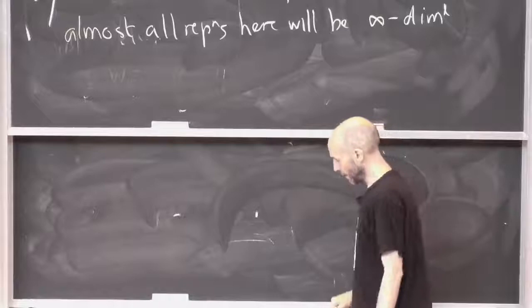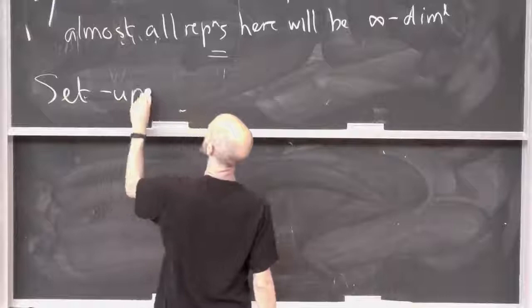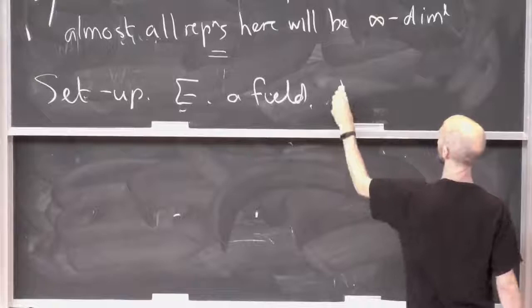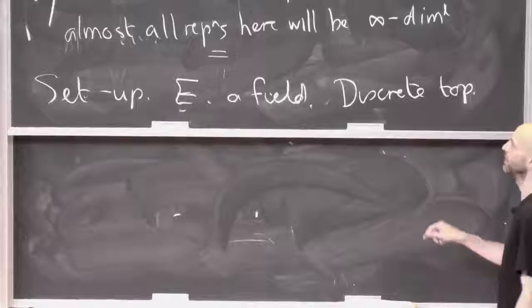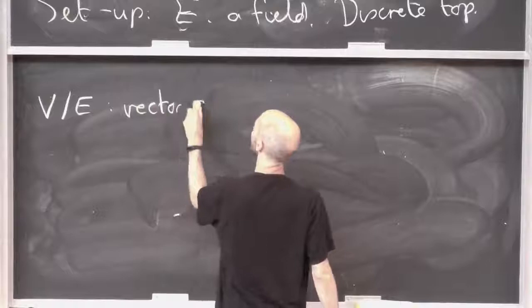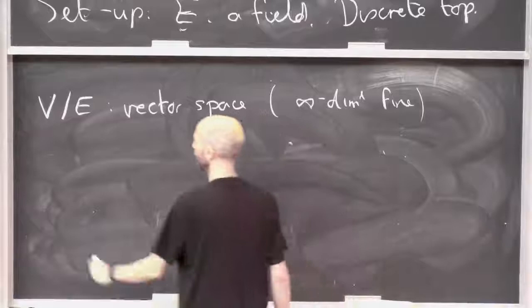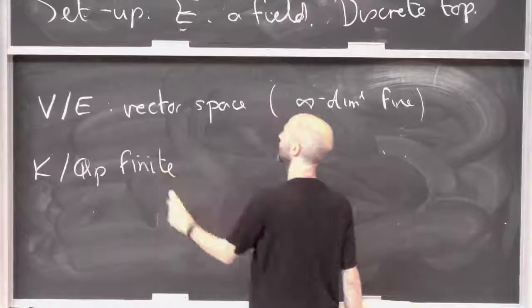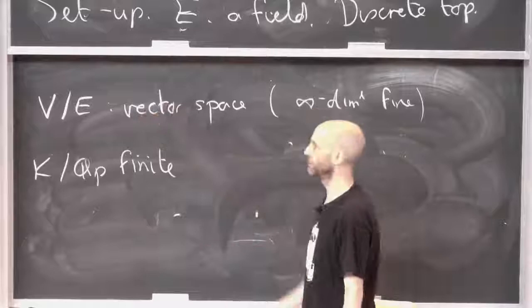Right, so as ever, we want E a field. Let's have E a field discrete topology. For Vedalin representations, E had to have characteristic zero because I needed to make sense of norm of something. But I think here I just need some random field. I don't think we need norms yet. So let's have V over E a vector space. So infinite dimensional is fine. And of course, we've got K over QP finite. And I want to consider the obvious, I'm going to put the discrete topology on E so that V is going to have the discrete topology and the automorphisms of V is going to have the discrete topology.